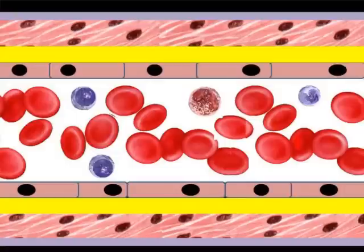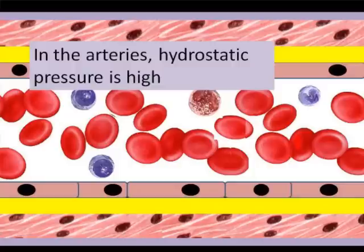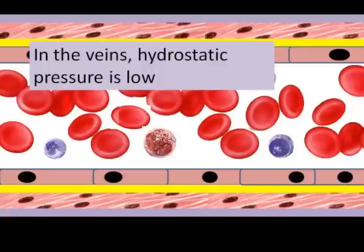The final point I'd like to make about the vessels themselves is the pressure of the fluid. The fluid is under pressure because the blood needs to be pushed around the circulatory system. This is called hydrostatic pressure. The hydrostatic pressure in the arteries is high and in the veins is low. There is still pressure there, but it's much lower in the veins.